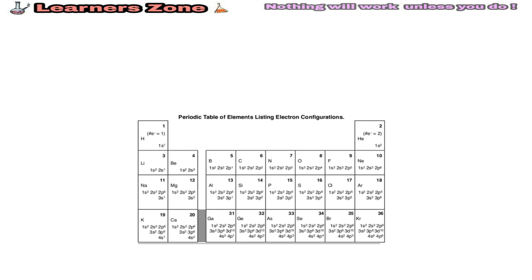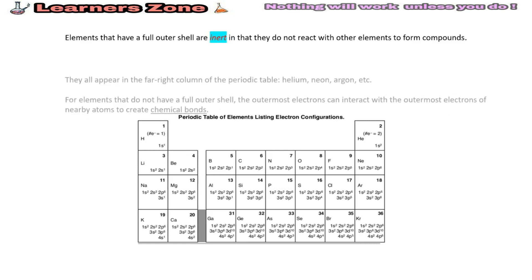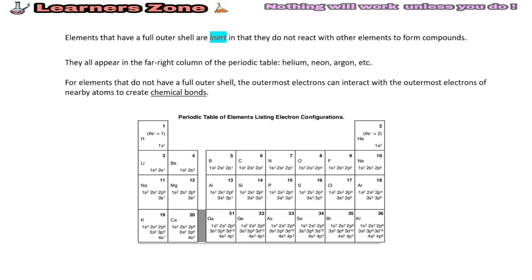If the outermost orbital or shell is fully filled, it is said to be inert and they do not react with other elements to form compounds. As you can see, in the last column of the periodic table, these are all inert gases.